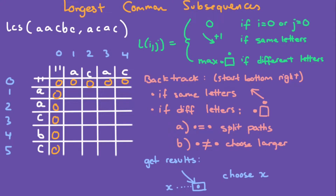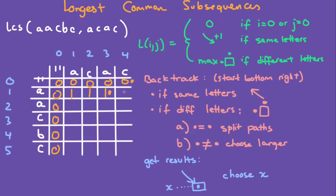Now look at A and A — they're the same letters. This symbol means you take this number plus one, so you get one. A and C — they're not the same, so in this case, if they're different, just look at the number at the top and the left and choose the larger one. Look at this number and this number and choose the larger one, so you get one.